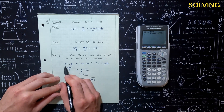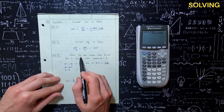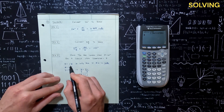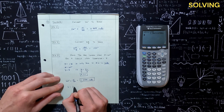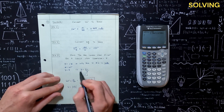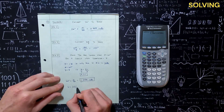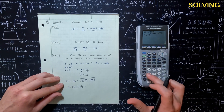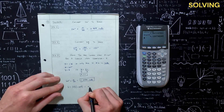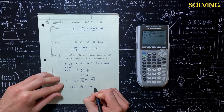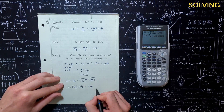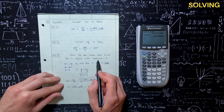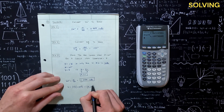So arc length S equals our radius, 4, times theta — our angle given in radians, which is 1.047. We do 4 times 1.047, and we get 4.189 units — whatever units were used for the diameter. So that is our answer: 4.189.